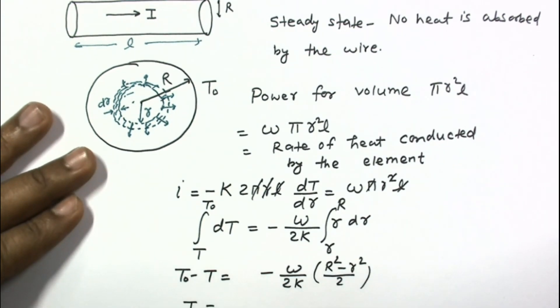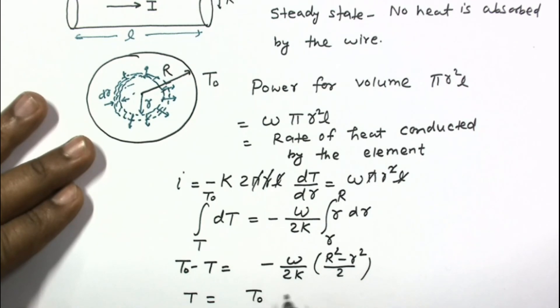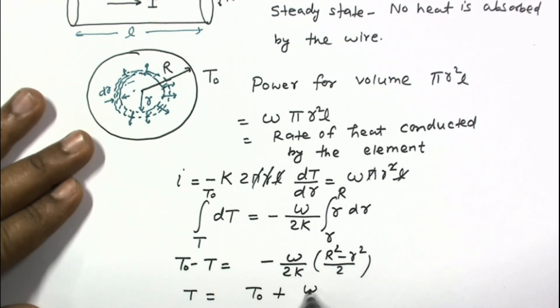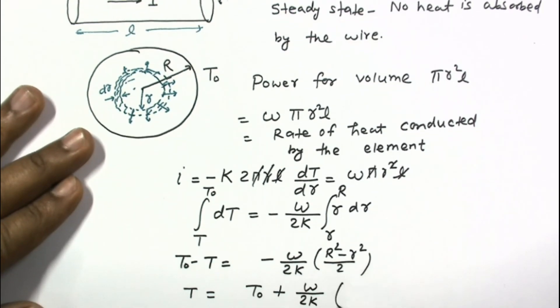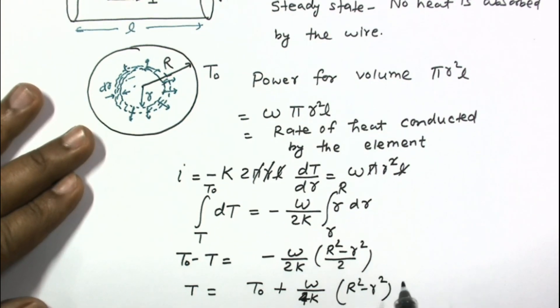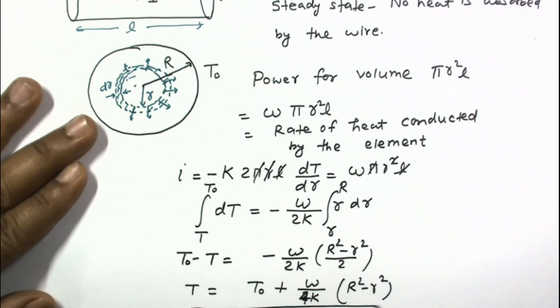The temperature T equals T₀ plus W/2K. And this 2 and 2 will be 4. R² minus r². So this is the final answer to this problem: temperature as a function of r.